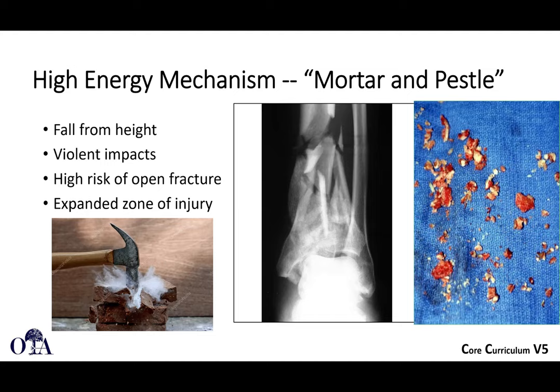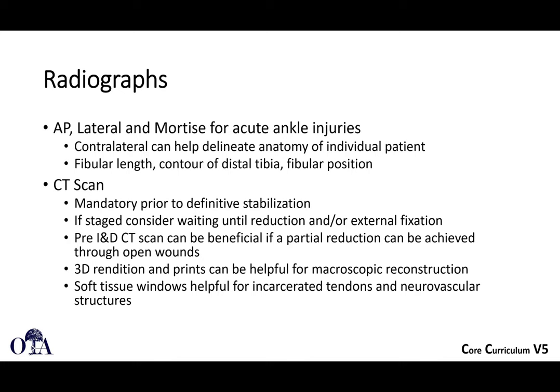For workup, you'll get standard radiographs—AP, lateral, and mortise views—as you would for an ankle. Contralateral images can sometimes help. CT scans are definitely helpful and essentially mandatory for preoperative planning. You may not do them immediately; if you have an open fracture going to the OR, you may want to proceed with external fixation first, and then the CT scan is more helpful once you have that reduction.